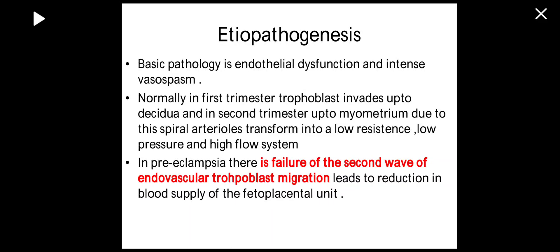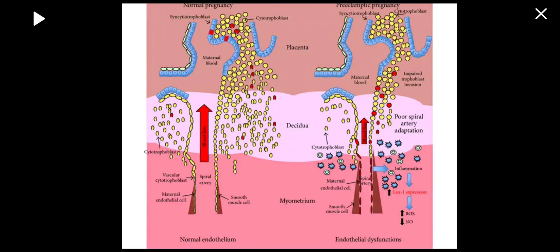Normally, spiral arteries are converted into large-bore capillaries capable of accommodating the intense blood flow of pregnancy. The trophoblast invades into the spiral arteries — first wave up to the decidua in the first trimester, then a second wave of trophoblastic invasion occurs around 16 weeks. However, this second wave is absent in preeclampsia, so the capillaries fail to convert into large-bore vessels.